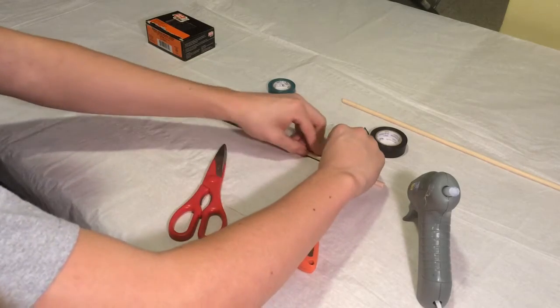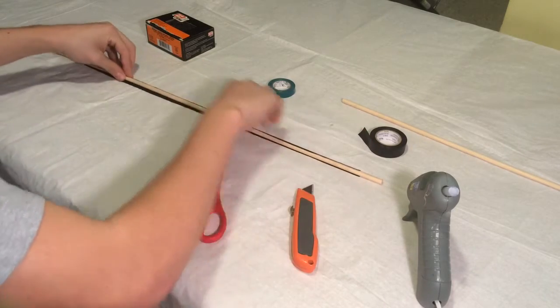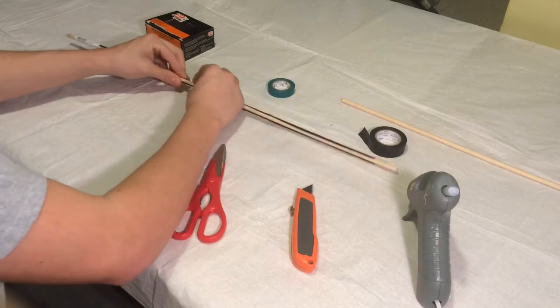The one piece of electrical tape doesn't fully fit it, so I just added two. Depending on the thickness of your wood pole, you're probably going to need two though.